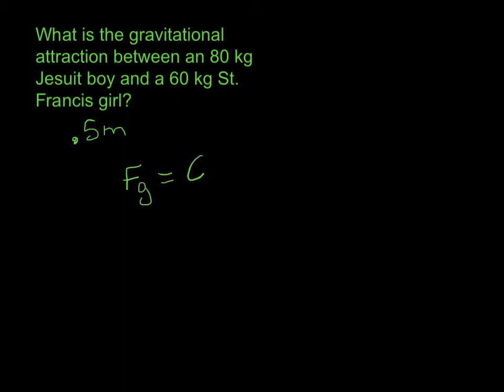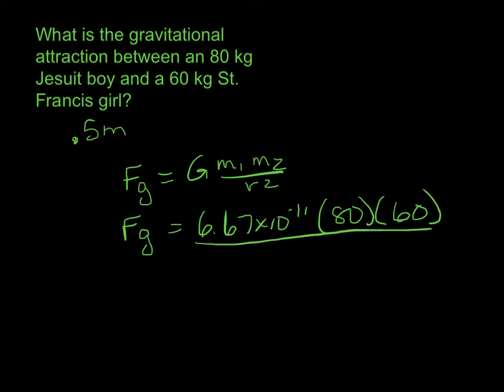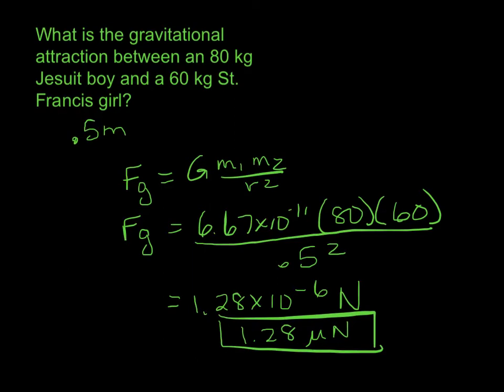FG is equal to big G, M1, M2 over r squared. So we have FG equals 6.67 times 10 to the minus 11. So notice we're always using that number. The mass of the boy, 80. The mass of the girl, 60. Divided by 0.5 squared. Don't forget to square that. And that comes out to 1.28 times 10 to the minus 8 newtons. That's 1.28 micro newtons. Ladies and gentlemen, that is a force that you can resist. It is not an irresistible force, and if this chick gets any skinnier that force is going to decrease not increase.